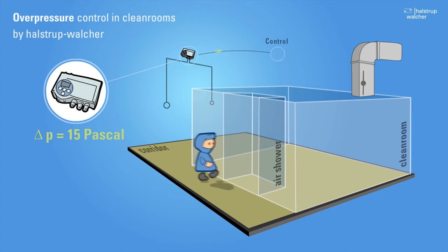A high-precision differential pressure transmitter from Halstrup-Walcher continuously monitors the pressure and sends readings to the control system.